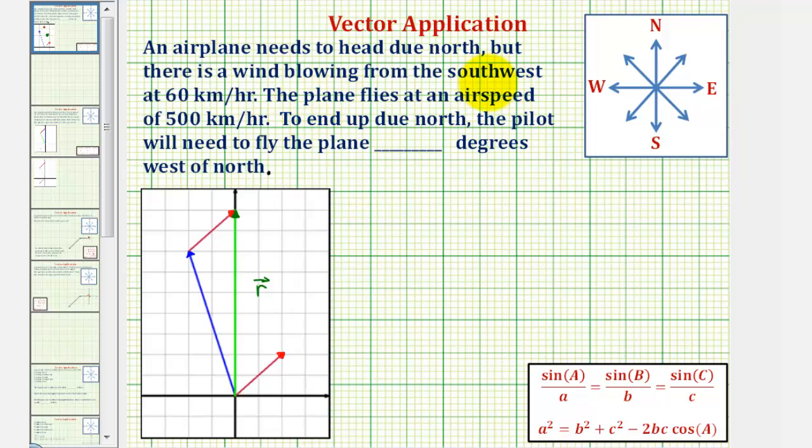Next, there's a wind blowing from the southwest at 60 kilometers per hour. So if the wind is blowing from the southwest, it's actually blowing in the direction of northeast or this direction here. So to sketch a vector to represent the wind, we could use this red vector here that points in the direction of northeast.